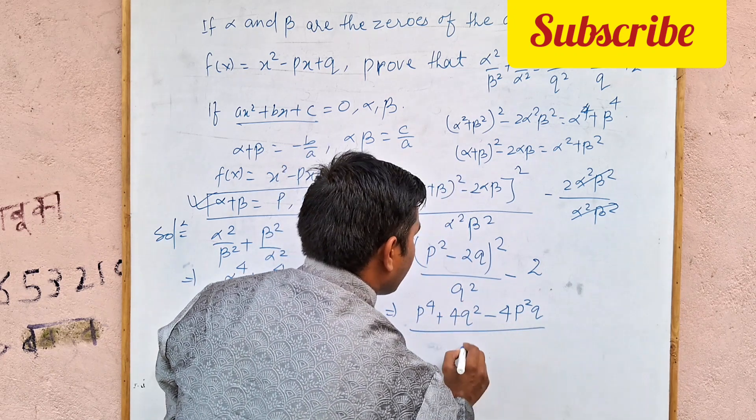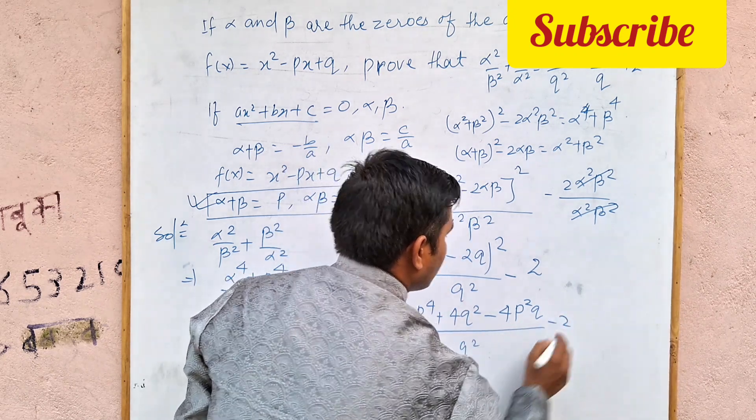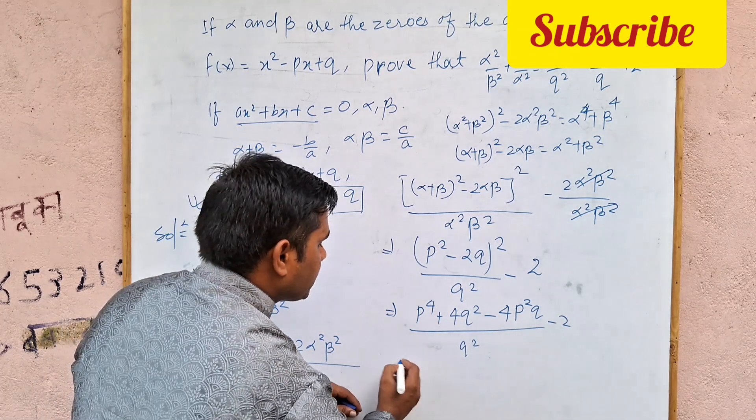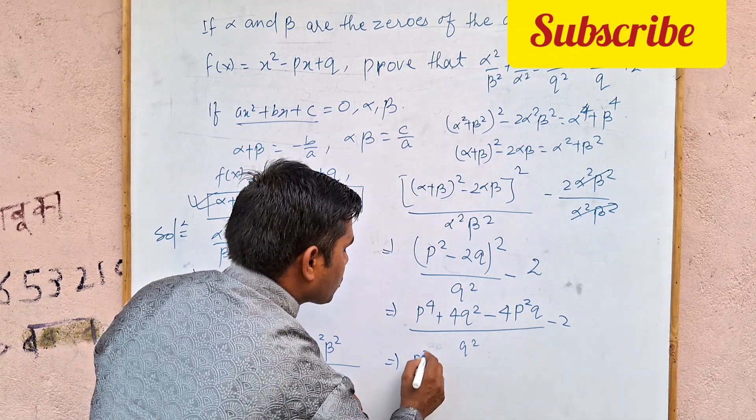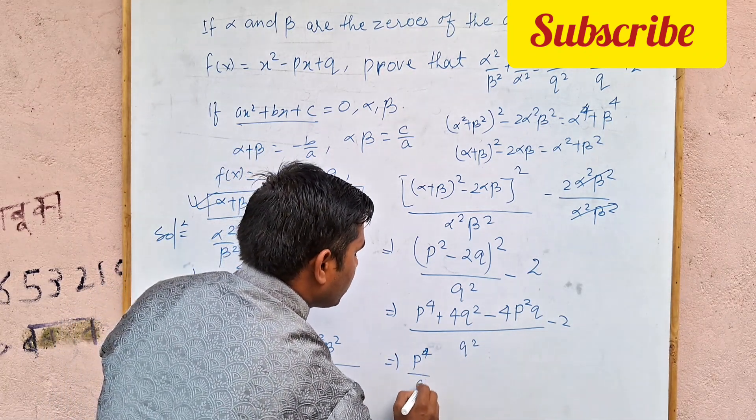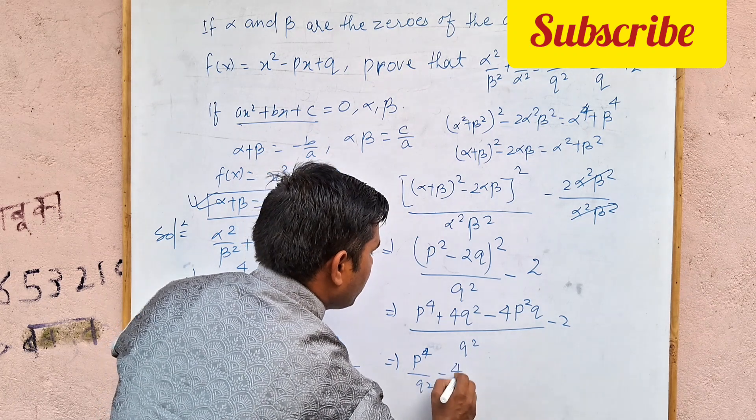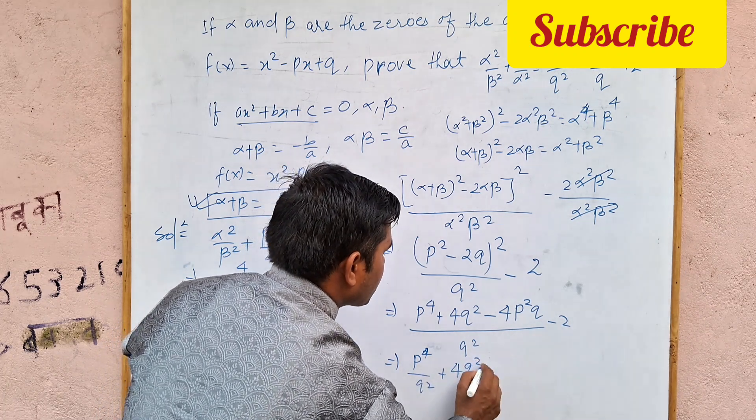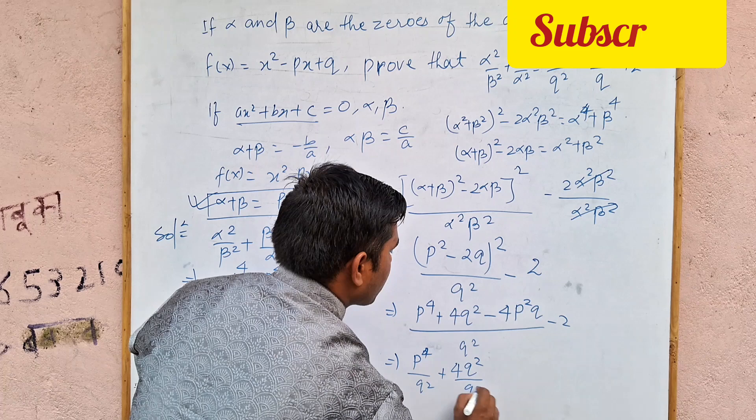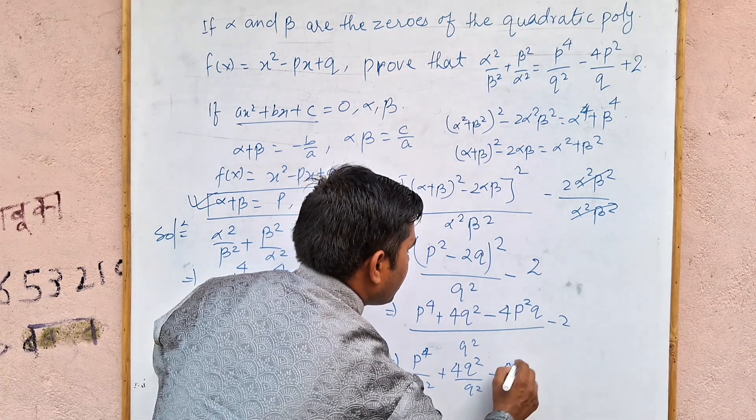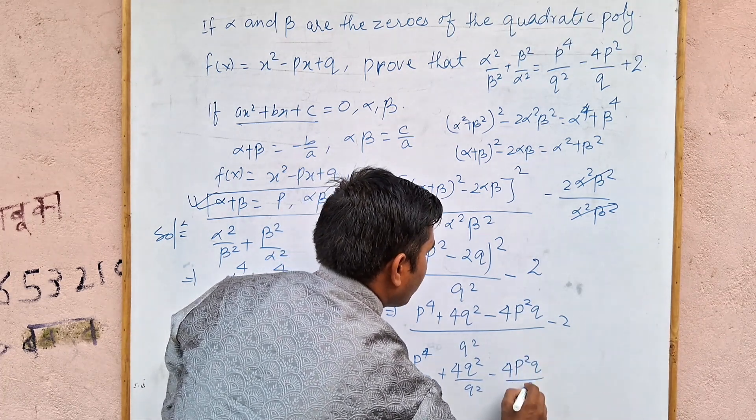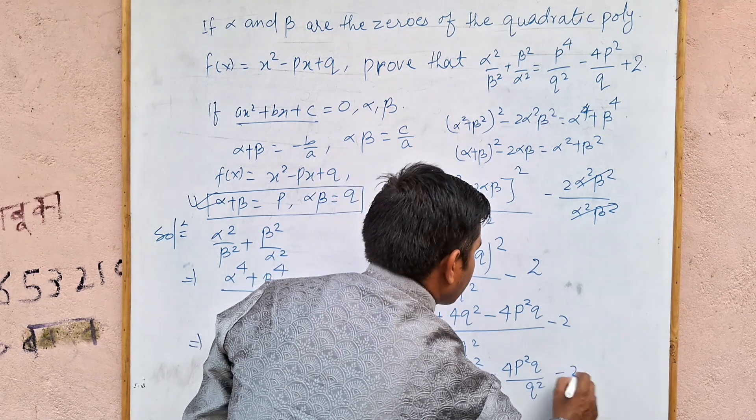And upon, what will happen? This is Q square and minus 2. Clear here? Now, one step will be able to understand. P power 4 upon Q square minus 4, plus 4 Q square upon Q square minus 4, P square Q upon Q square minus 2.